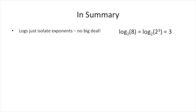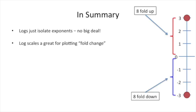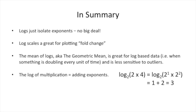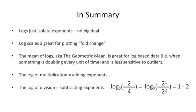In summary: logs just isolate exponents. For example, log base 2 of 8 equals 3 because 3 is the exponent for 2. Second, log scales are great for plotting fold change — 8-fold up is the same distance from 0 as 8-fold down; everything is symmetrical. Third, the mean of logs, a.k.a. the geometric mean, is great for log-based data when something is doubling every time, and is less sensitive to outliers than the normal mean. Fourth, the log of multiplication is just adding the exponents. And lastly, the log of division is the same as subtracting the exponents.